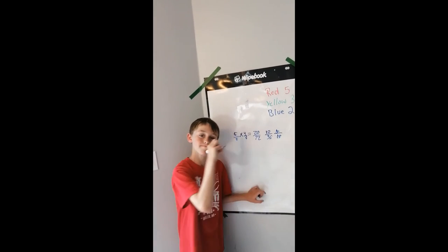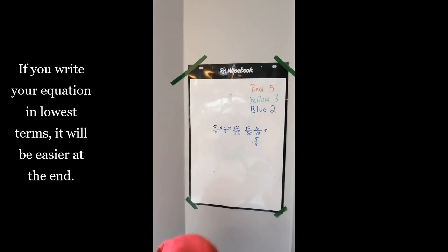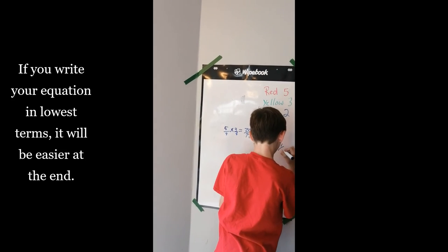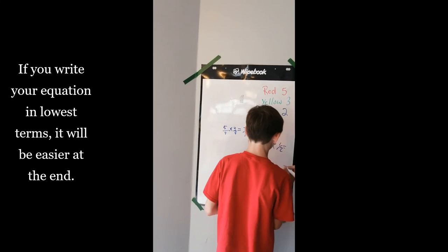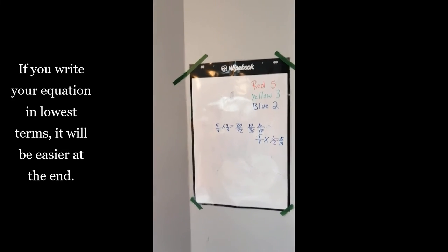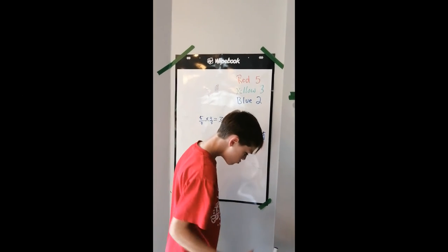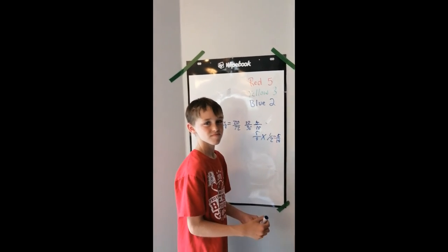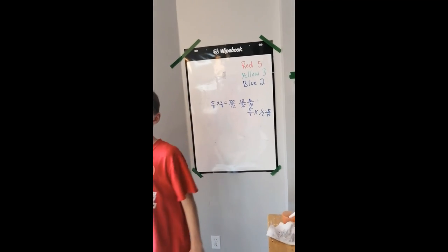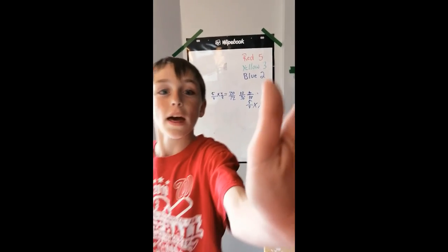Now let me show you what would have happened if from the start you had written five-ninths times one-half — because four-eighths simplifies to one-half. Five times one is five, nine times two is eighteen — you get five over eighteen, the same answer, without having to simplify a large fraction afterward. That's why you want to put your fractions in lowest terms before you start multiplying. Now grab your probability project books and get started on the next page with the different desserts. Pay close attention to which questions use independent events and which use dependent events. Math with the Mask — peace.